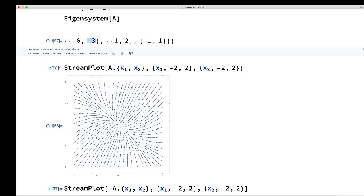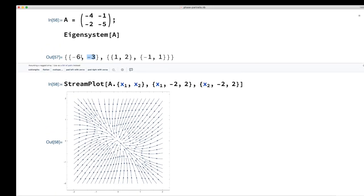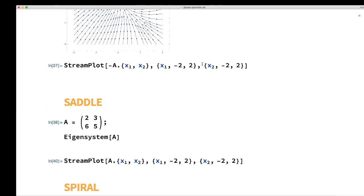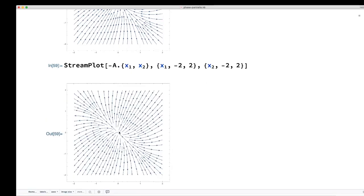Now, if I just reverse the signs of these eigenvalues by taking negative A instead, all that does is reverse all the arrows, so it's like we reverse time, and you go from stable to unstable node.